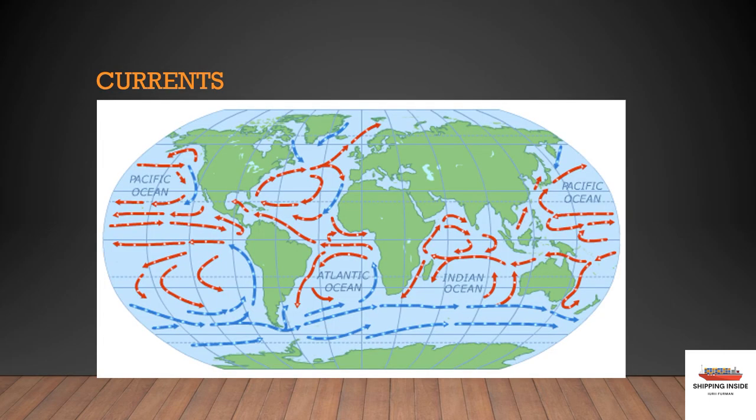Currents. Fast currents can cause particular problems in estuaries, which are wide entrances to rivers. Currents also flow through narrow gaps between pieces of land. Other factors also play their part in the creation of ocean currents and all can affect navigation. The subject has been well researched and reference books tell seafarers what currents to expect in any part of the world.